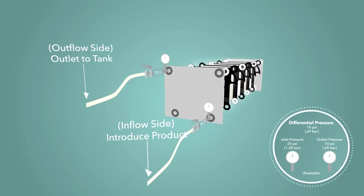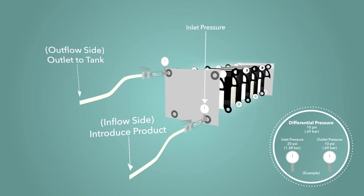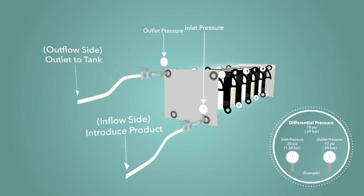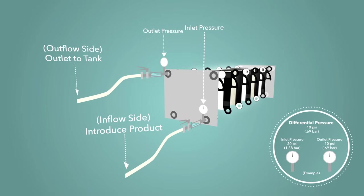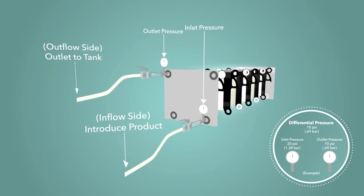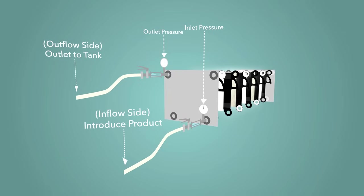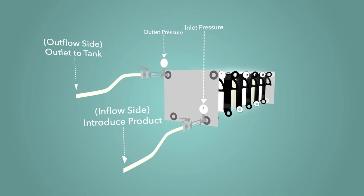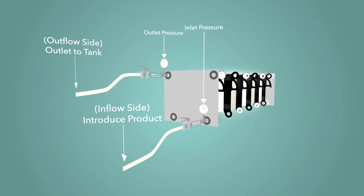Differential pressure is calculated by the difference between the inlet pressure and the outlet pressure. Outlet pressure is commonly very low unless a counter pressure tank is used, downstream valves are not fully open, or significant elevation is required to arrive at the destination tank.